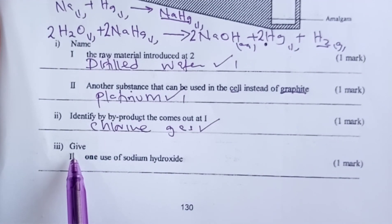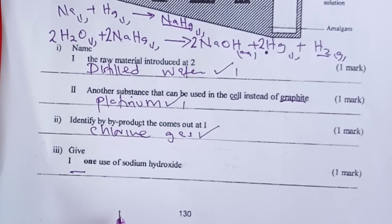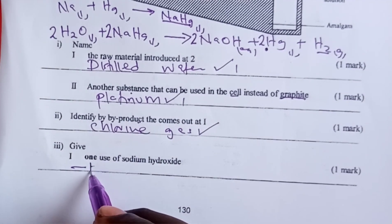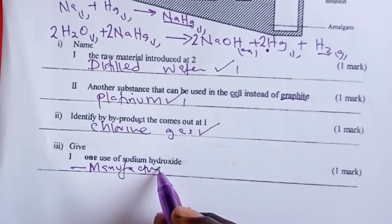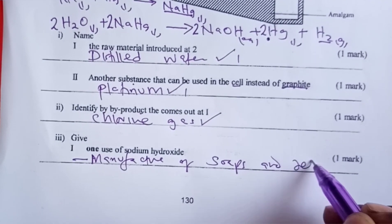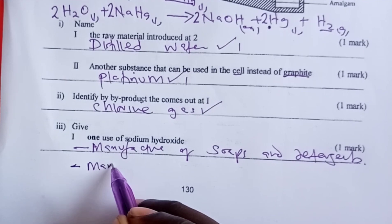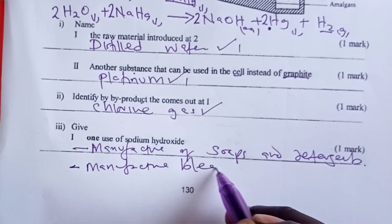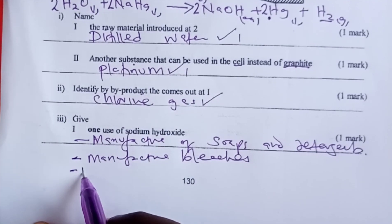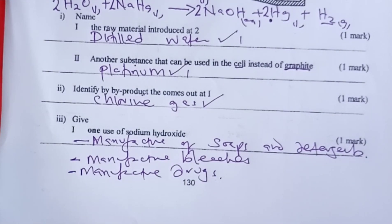For Roman three, we were told to give one use of sodium hydroxide. Sodium hydroxide has several uses including manufacture of soaps and even detergents, manufacture of bleaches, and sodium hydroxide is also used to manufacture drugs. The examiner only expected one use, so a student had the option of choosing between those three.